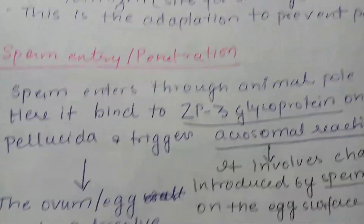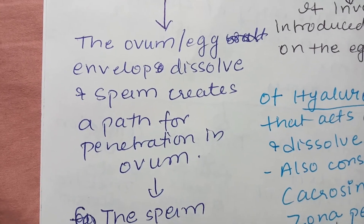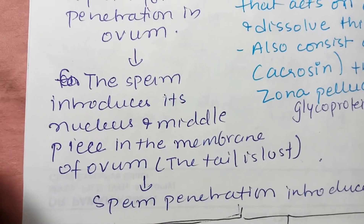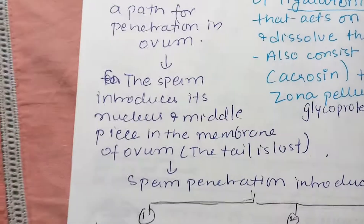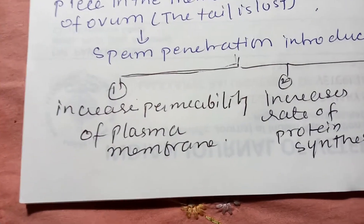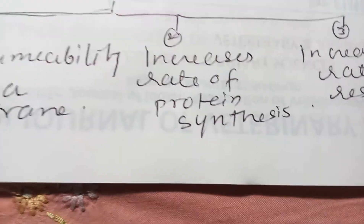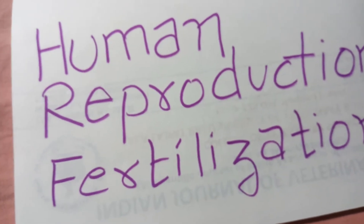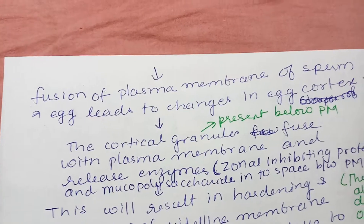Once the acrosome reaction is initiated, the egg envelopes dissolve and the sperm creates a path for penetration into the ovum. The sperm introduces its nucleus and middle piece into the membrane of the ovum — the whole sperm doesn't enter; the tail is lost outside. Sperm penetration introduces three things: increase in permeability of the plasma membrane of the ovum, increased rate of protein synthesis, and increased rate of respiration.